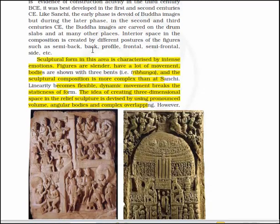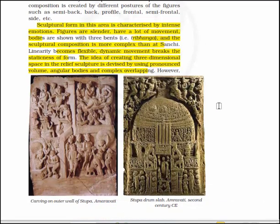The sculptural form in this area is characterized by intense emotion. Figures are slender with a lot of movement; bodies are shown with three bends like the Tribhanga posture, and the sculptural composition is more complex than at Sanchi. Linearity becomes flexible, dynamic movements break the staticness of the form, and the idea of creating 3-dimensional space in the relief stupa is devised by using pronounced volumes, angular bodies and complex overlapping.